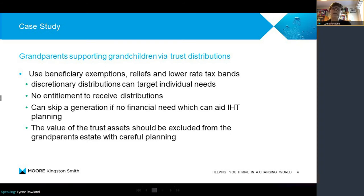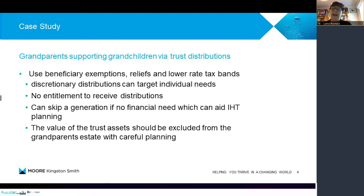One of the most popular uses of discretionary trusts is by grandparents setting them up to support their grandchildren. The reason this works really well is that even though a trust may pay tax at the highest rate — i.e. 45% — grandchildren often don't have any income, so they've got all their reliefs and exemptions available. And so when they receive money from the trust, they can make a tax reclaim equivalent to the tax that the trust has already paid.